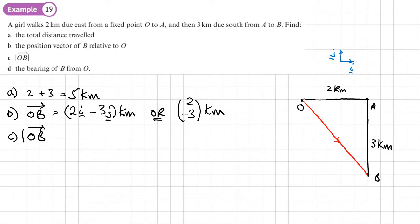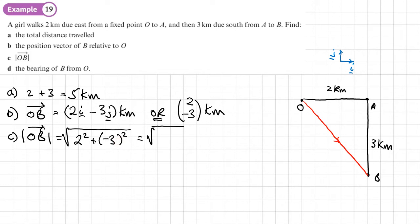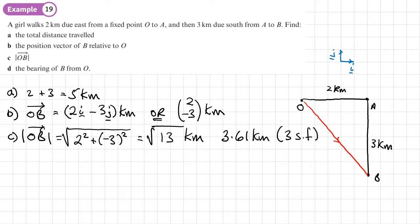Part C: find the magnitude of OB. We do Pythagoras on these values, so it's the square root of two squared plus negative three squared, which is the square root of four plus nine, giving root 13. We probably want to give the distance as a decimal, so that's 3.61 kilometers to three significant figures.